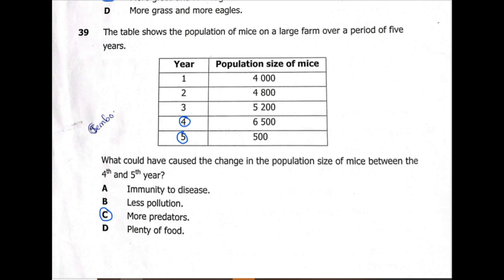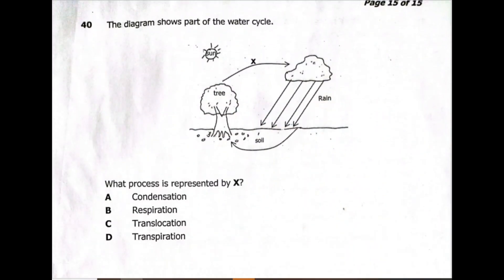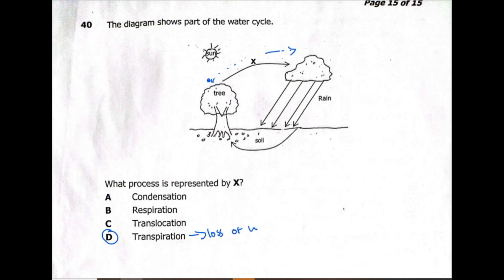The last question — question 40 — shows part of the water cycle. What process is represented by X? We can see vapor going into the atmosphere. The answer is transpiration — defined as the loss of water vapor from plants. This is how we can answer some of these questions. That's it for this video. Thanks for watching.